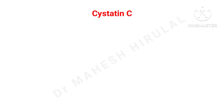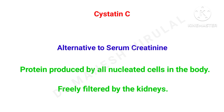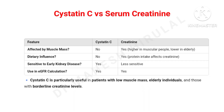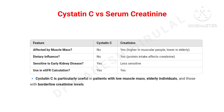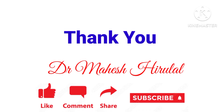Cystatin C is a new and emerging biomarker which can be used as an alternative to serum creatinine. It is a protein produced by all nucleated cells in the body and is freely filtered by the kidneys. Compared to creatinine, cystatin C has more merits — it is not affected by muscle mass and there is no dietary influence on its levels. Thank you for watching. Kindly subscribe to the channel to get notifications of the next video.